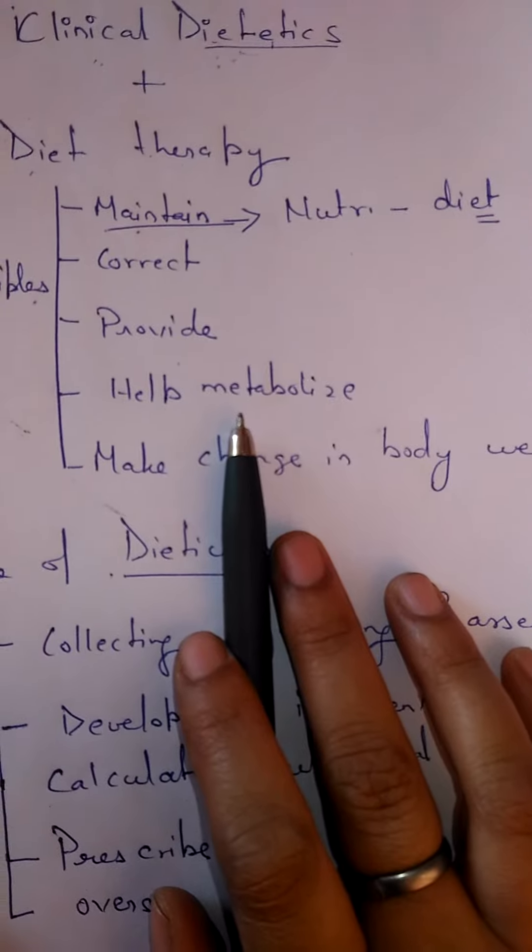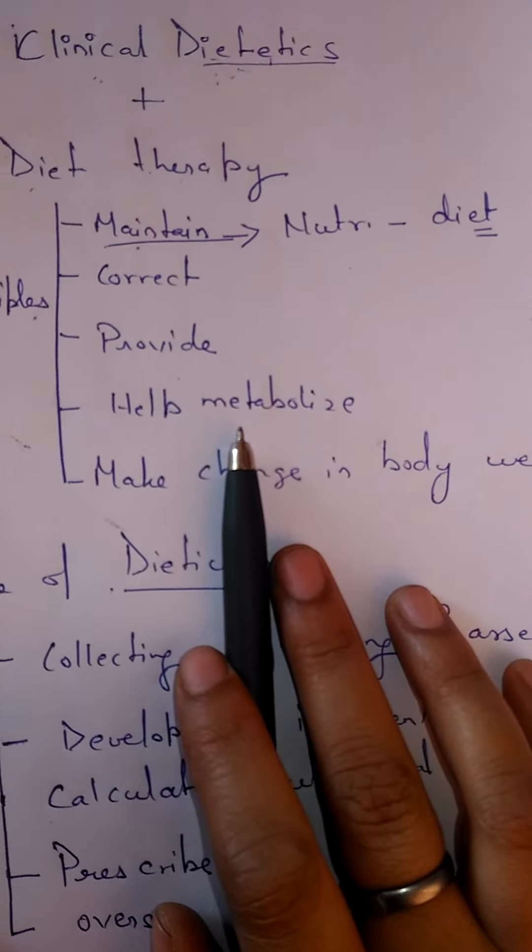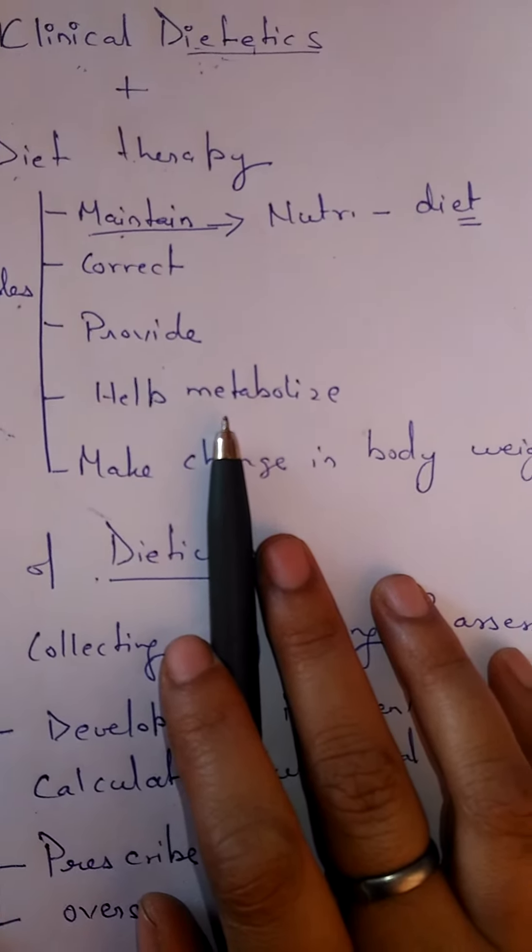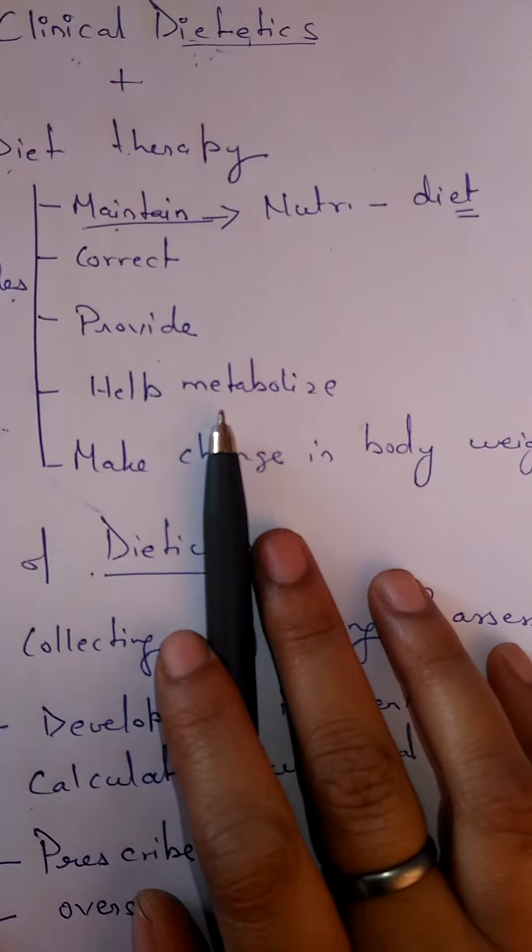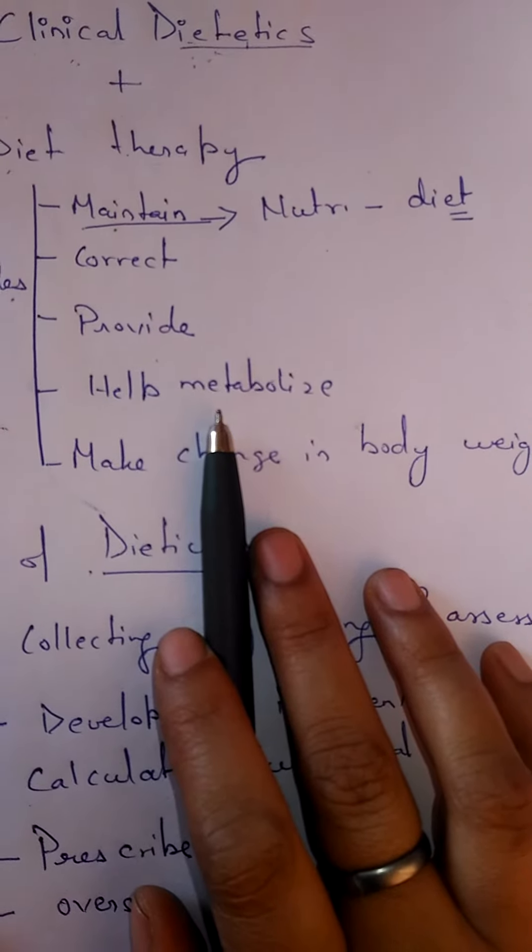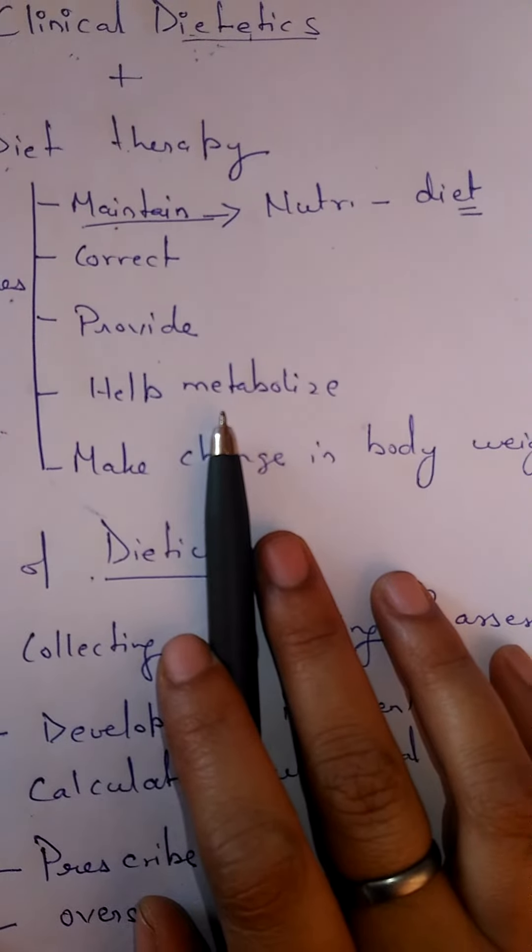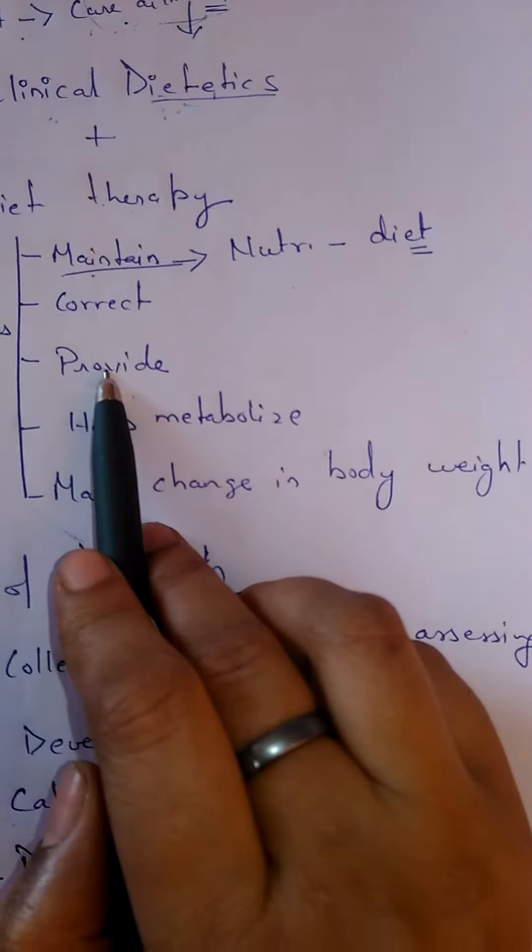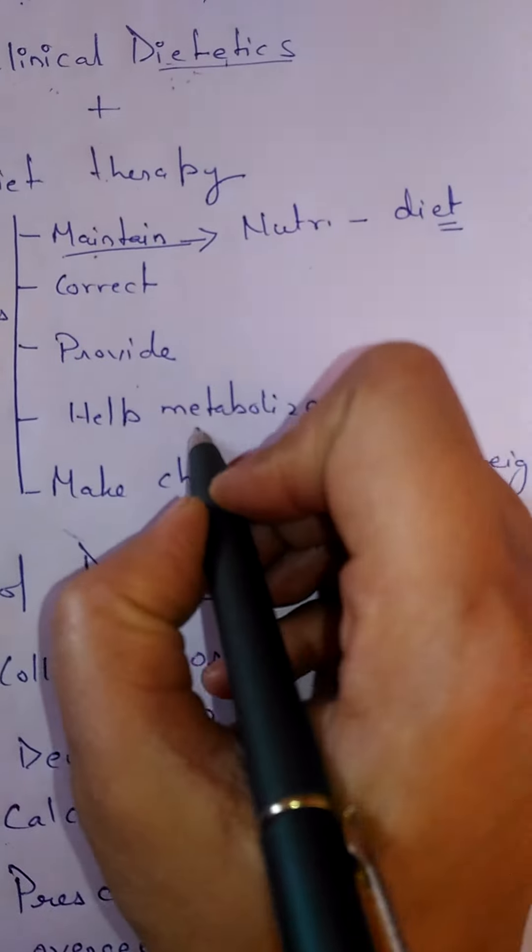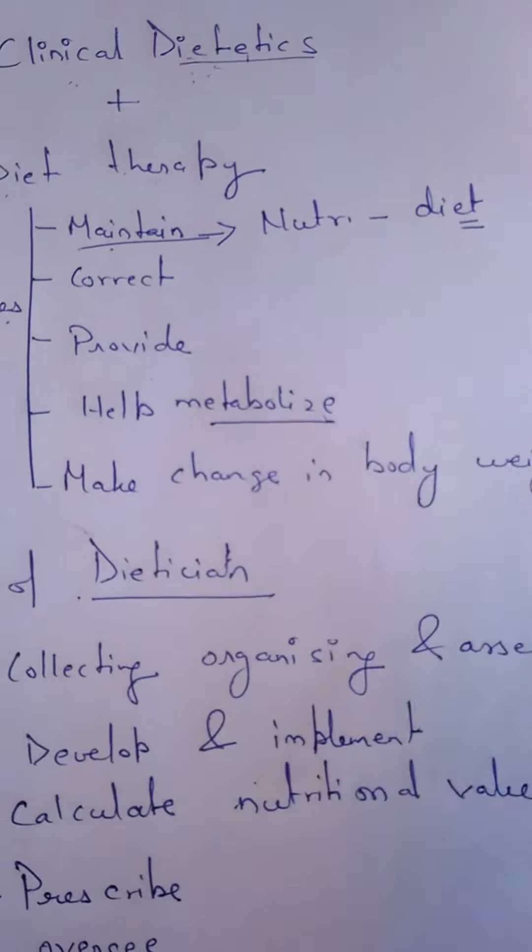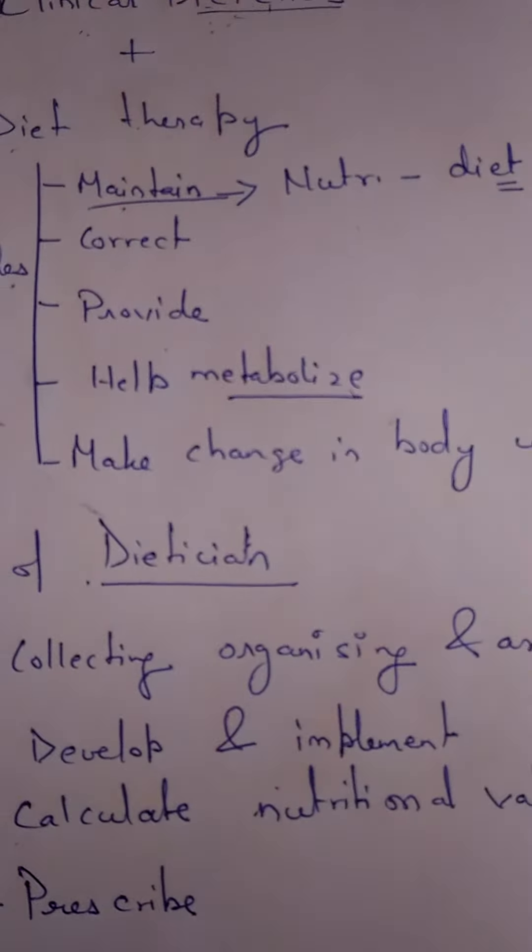Like we can see certain people are suffering from central obesity. Central obesity means deposition of fat near their belly area. So what is happening to them? They are taking all these three things, but which thing is not happening in their body? Metabolization of the particular nutrient which is getting accumulated at any particular part of their body.